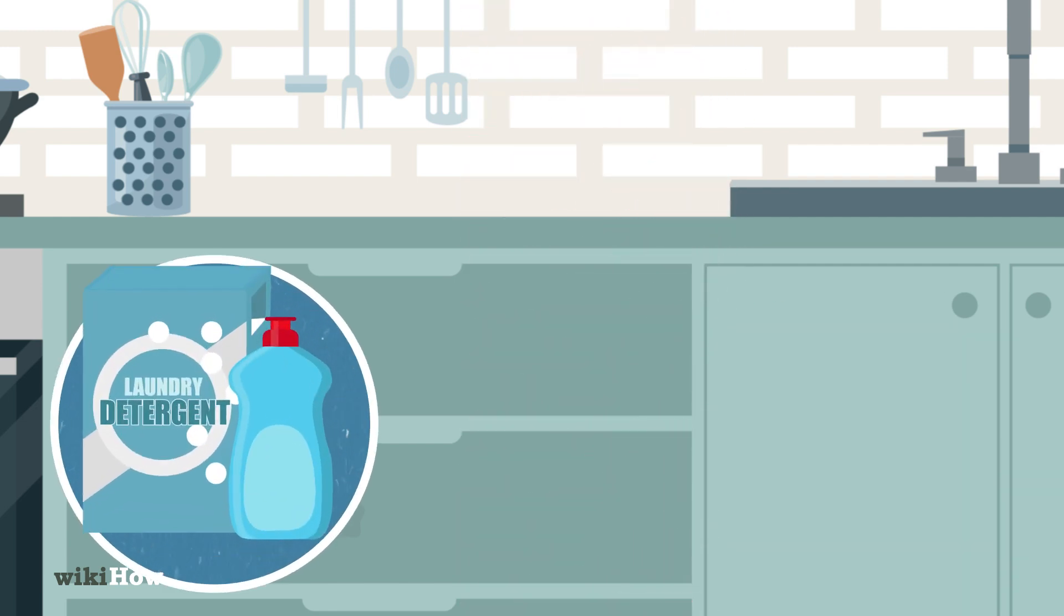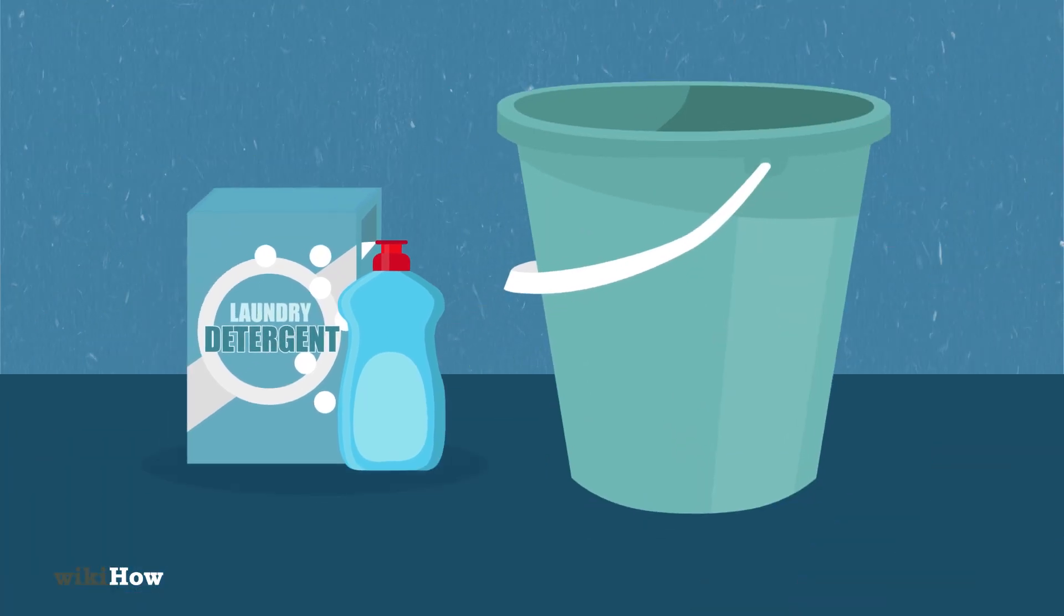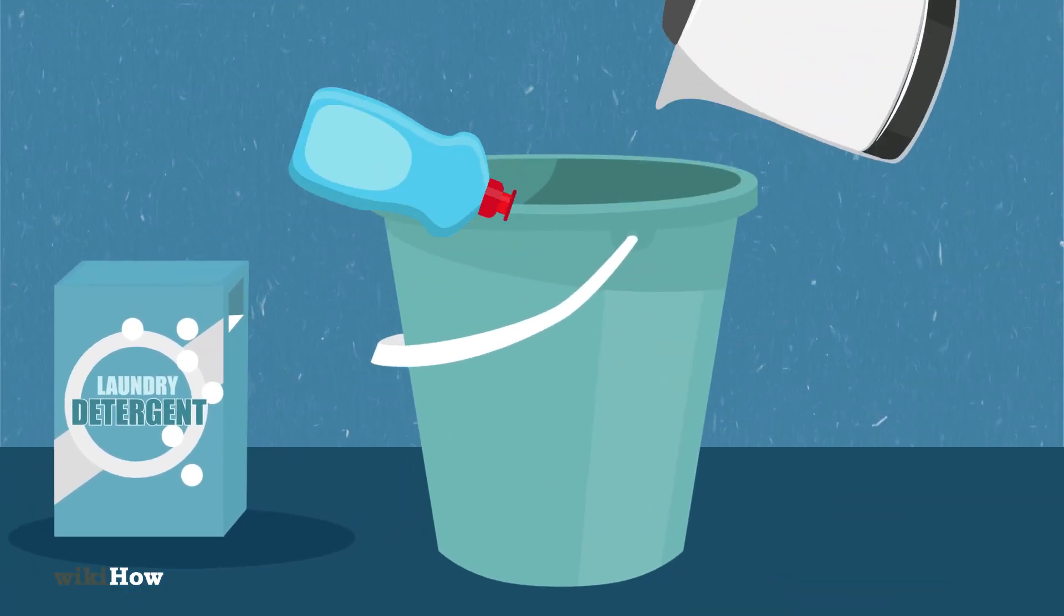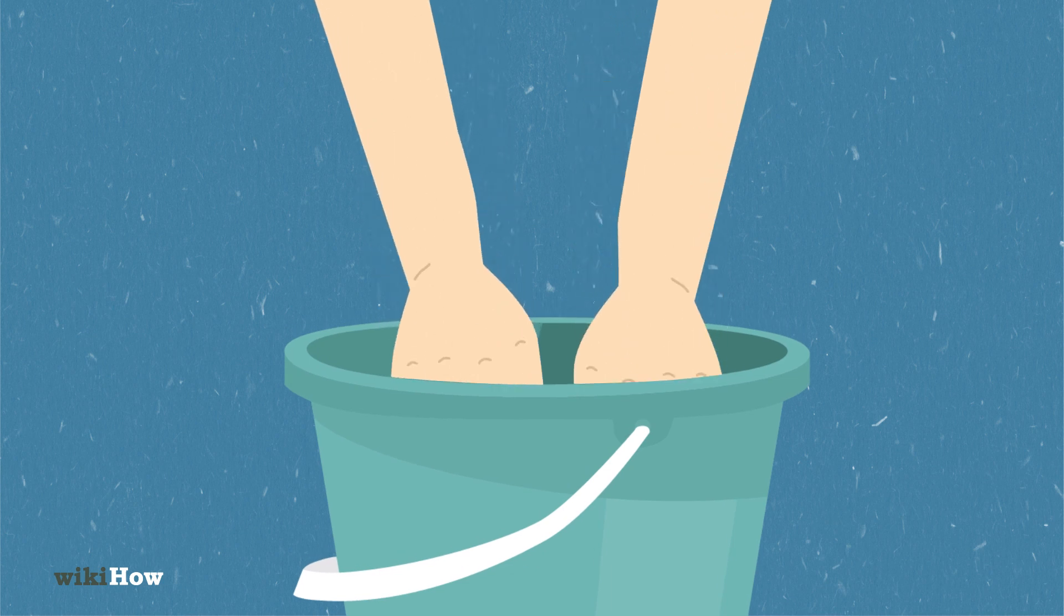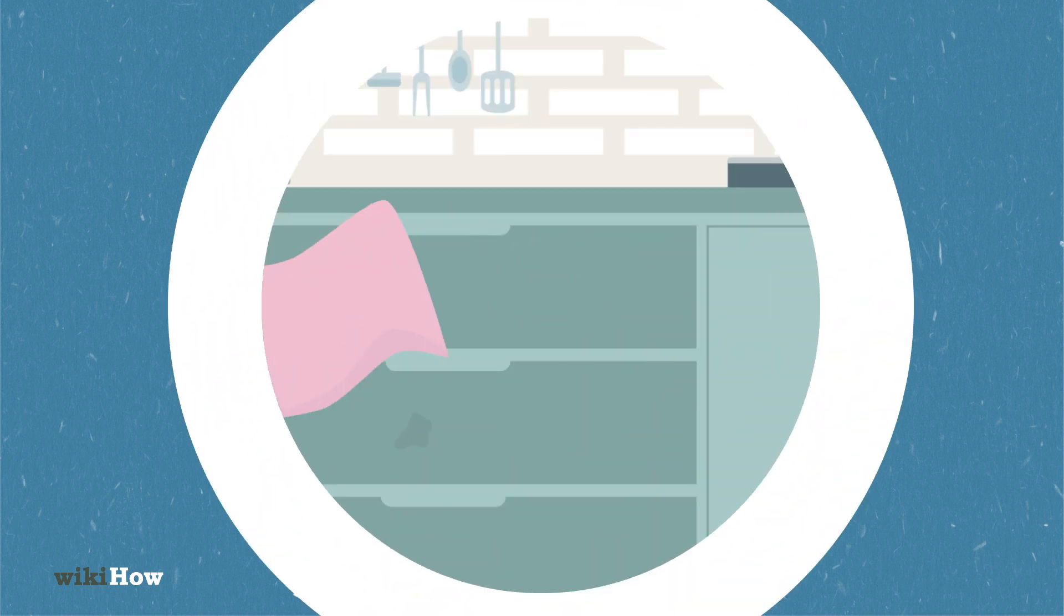To clean with dish soap or laundry detergent, create a solution by adding the soap to warm water in a bucket. Dip the dishcloth into the solution, wring out excess moisture, and wipe the cabinets.